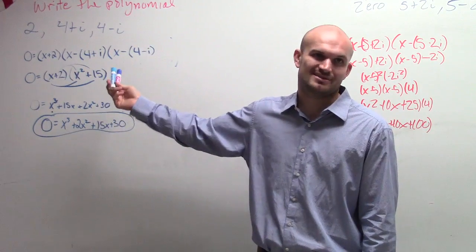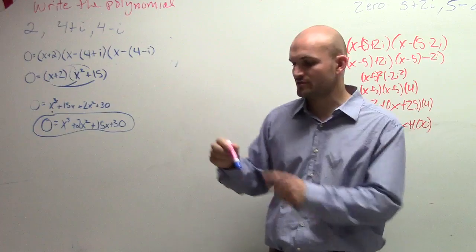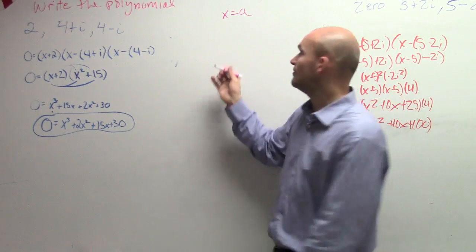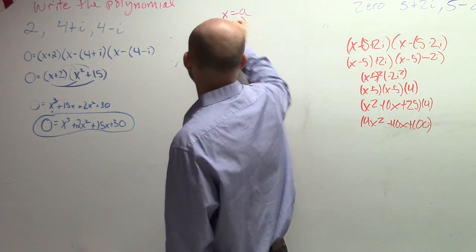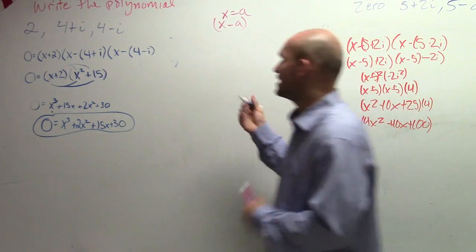We go from zeros to factors. That's the hardest part right there. You've got to write from zeros to factors because remember if I have x equals a is a zero, then x minus a is my factor. So the student did a great job. They wrote down the correct factors.